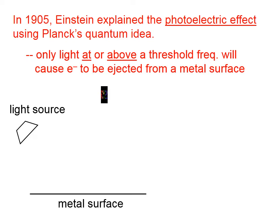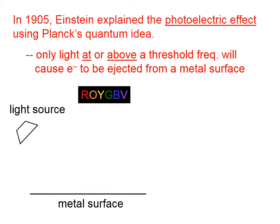So let's say we have a light source shining light on a metal surface. For the purposes of illustration, we're going to refer to the visible spectrum. Red wavelengths are lower frequency, and at the other end, violet wavelengths are higher frequency. So let's shine red light on this metal surface, and what we observe is no electrons being ejected — this is fairly bright red light, and no electrons are ejected.